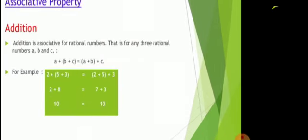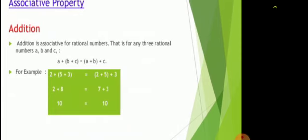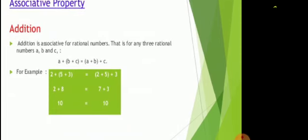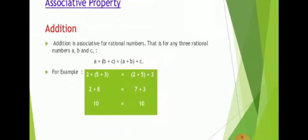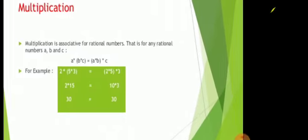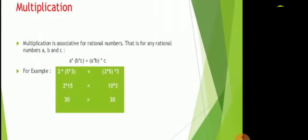Associative property. Addition is associative for rational numbers, that is for any three rational numbers a, b and c. You can see in the example also. Multiplication is associative for rational numbers, that is for any rational numbers a, b and c.